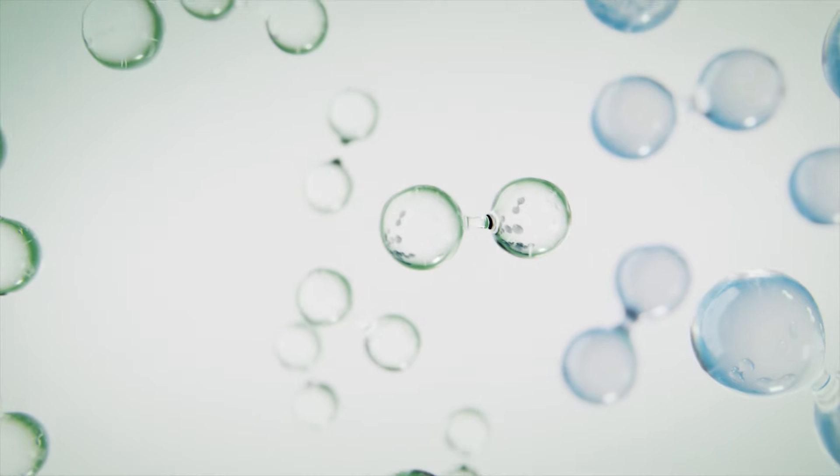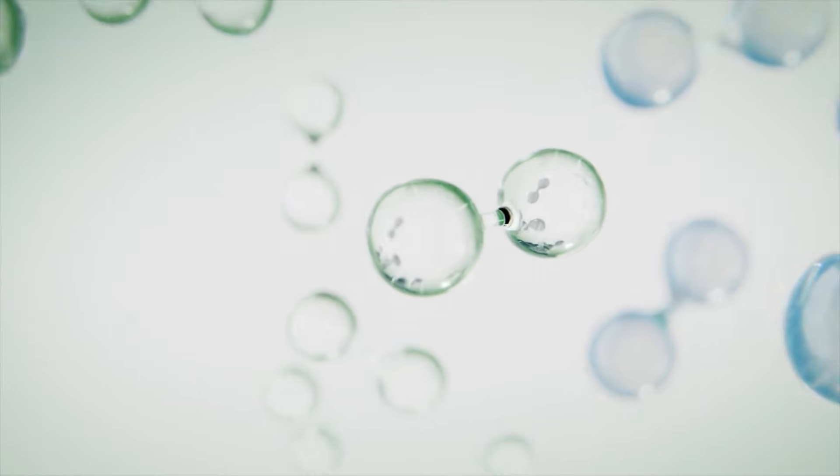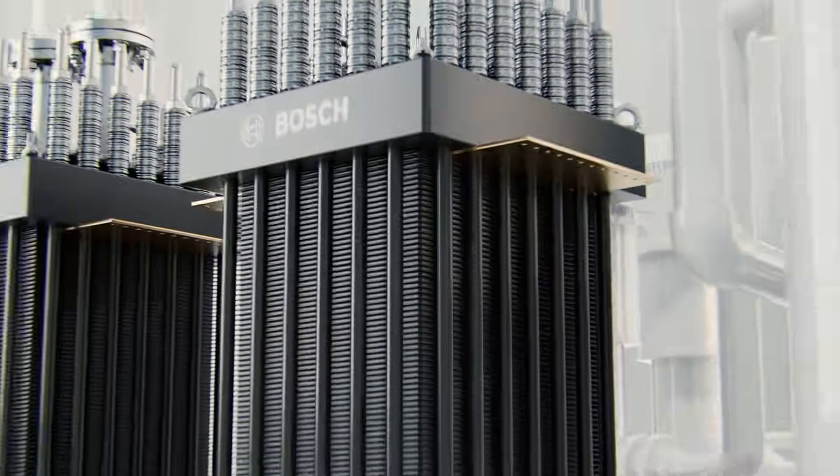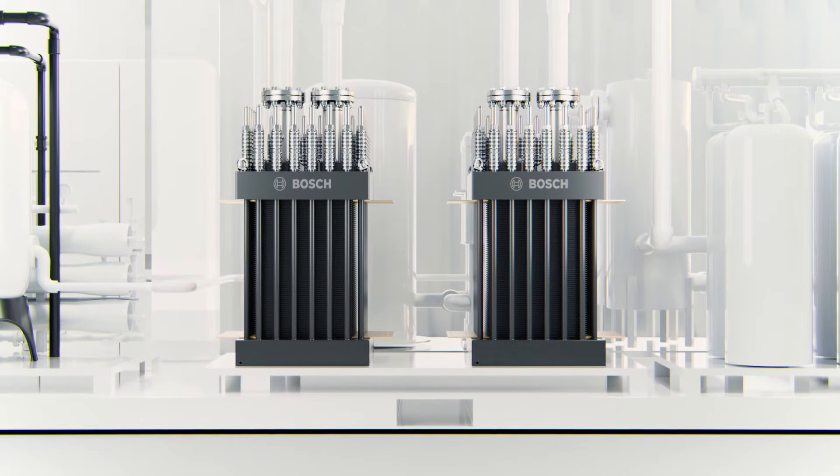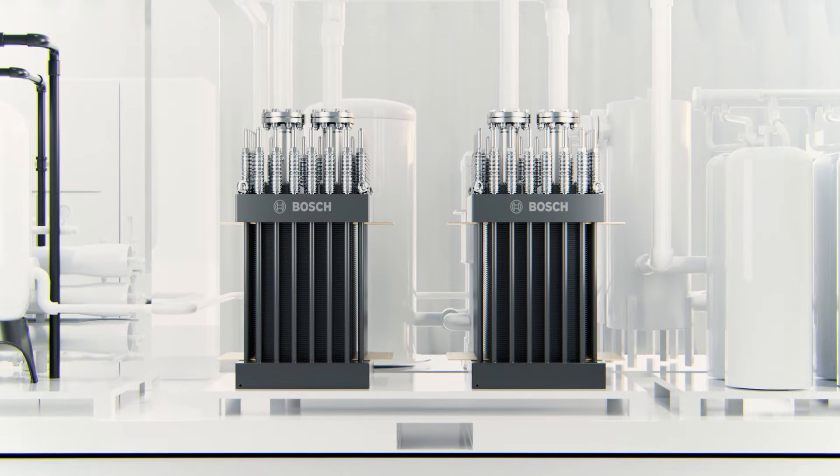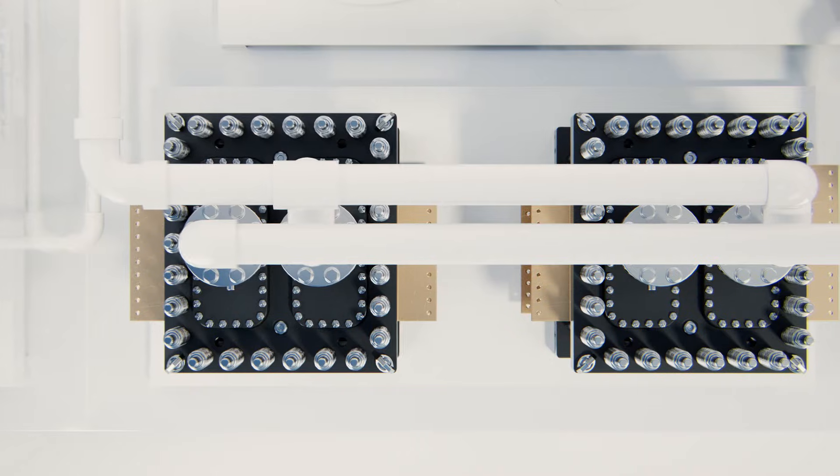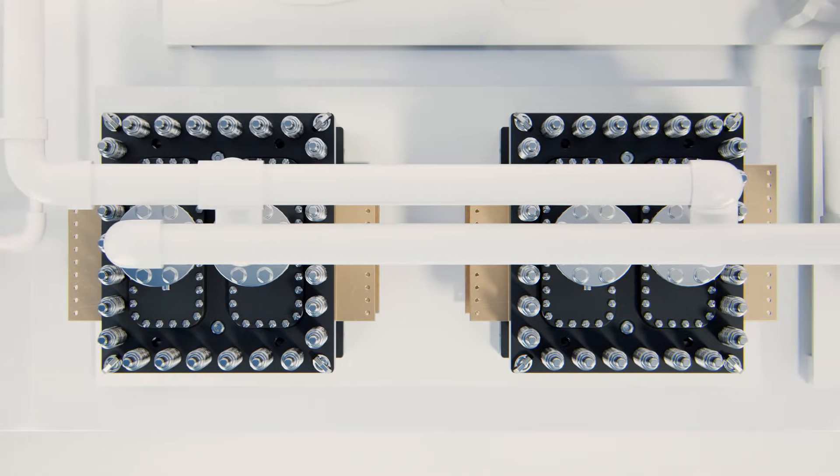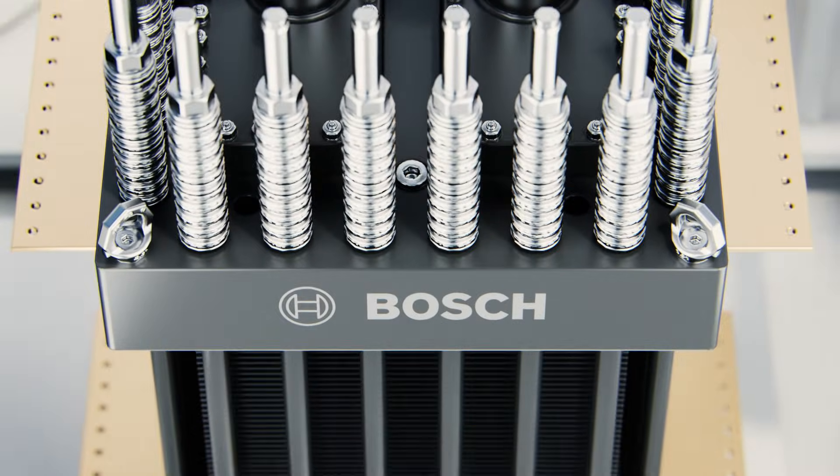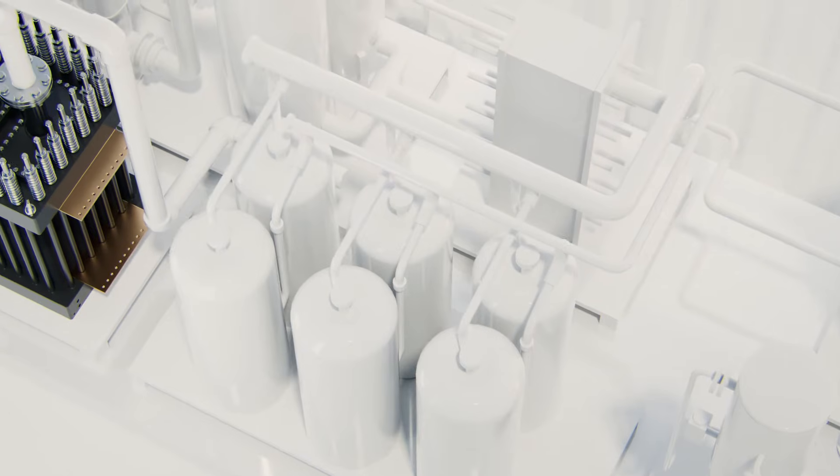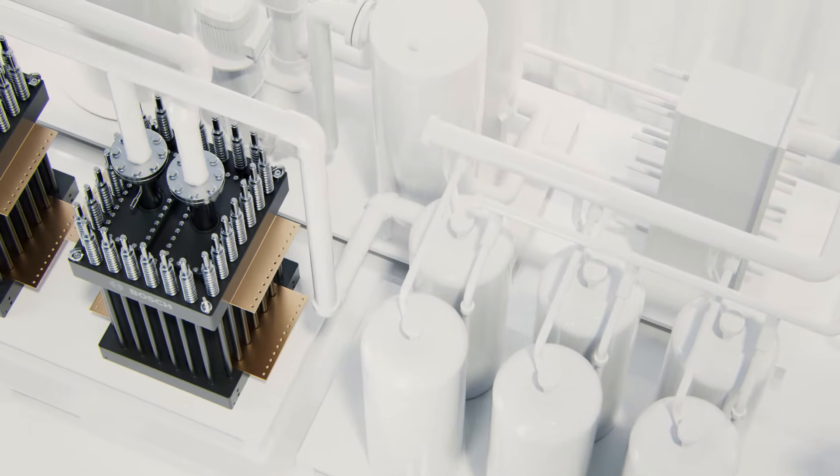Our Bosch electrolysis stacks use a method known as PEM electrolysis. One of its advantages is that it is a space-saving solution thanks to its high power density. Another is its high hydrogen output pressure. What's more, it can adapt ideally and flexibly to the generation profiles of intermittent renewables while maintaining a high level of efficiency.